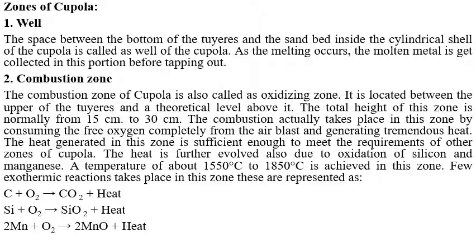The combustion zone, also called the oxidizing zone, is located between the upper level of the tuyeres and a theoretical level above it. The total height of this zone is normally 15 to 30 centimeters. Combustion takes place here by consuming free oxygen from the air blast, generating tremendous heat sufficient to melt the charge. The temperature in this zone ranges from 1550°C to 1850°C.